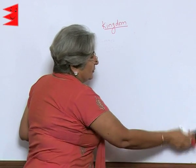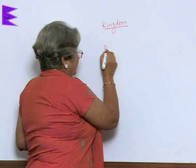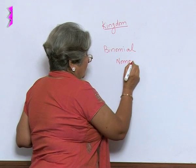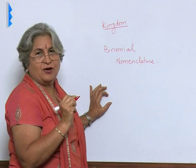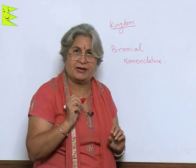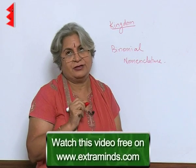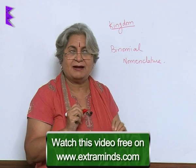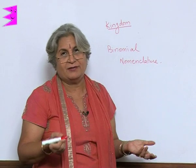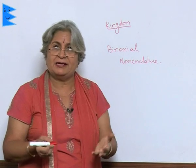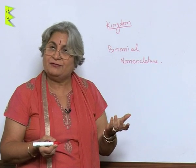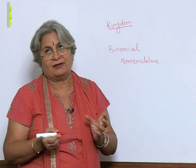Binomial means 'two names,' and nomenclature is the system of naming. With the help of binomial nomenclature, all living organisms have been named. These names are usually taken from Greek or Latin so that they are understood universally. All biologists can understand a scientific name, but if we use names from various local languages, even within India people would not understand. So we use a universal language of scientific names.